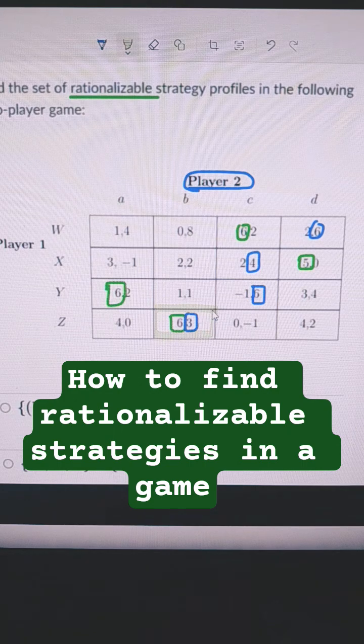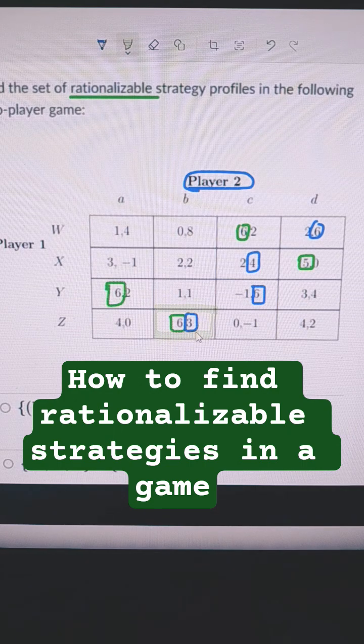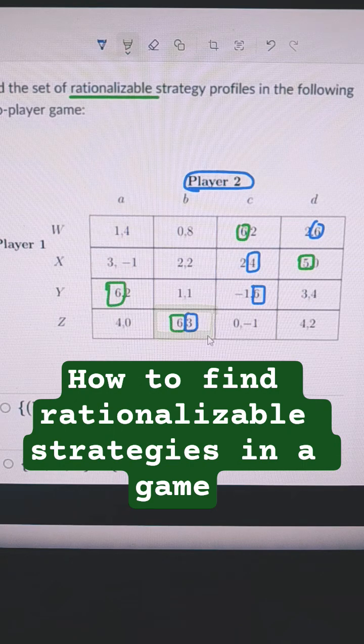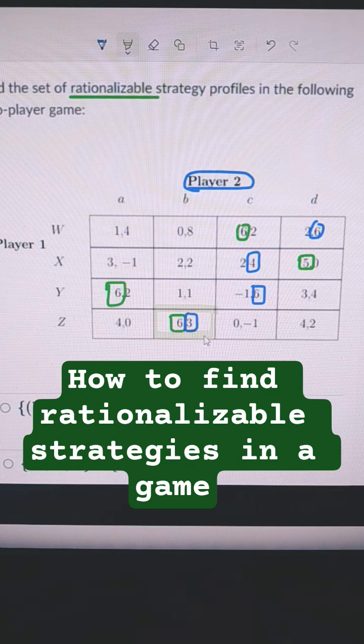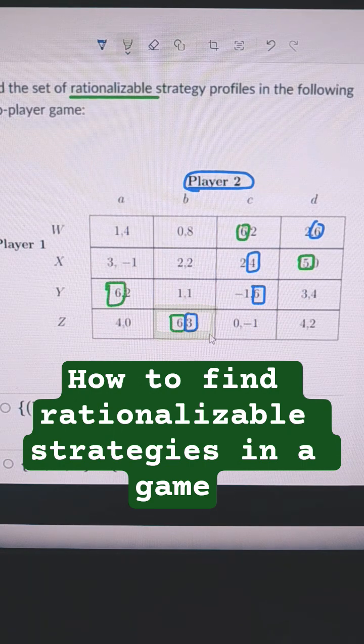This right here, this is the Nash equilibrium. This is the outcome that neither party is going to change from. You can say it that way, or it's just the most likely outcome in this game when they're picking simultaneously.